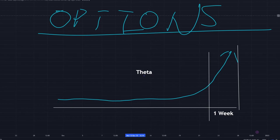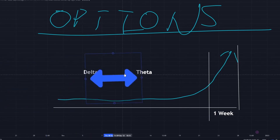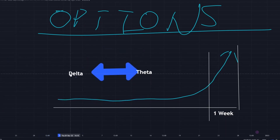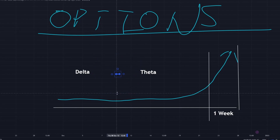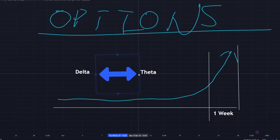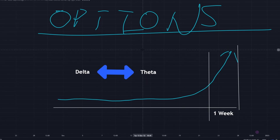Most of the time you don't get the directional move needed to counteract theta. So theta is time decay — the amount of money you're going to lose every single day. Delta is the Greek that counteracts theta. Essentially, option values are a constant fight between delta and theta: does your option contract go up in value, or does it bleed out? These are the two main things to pay attention to when buying options.